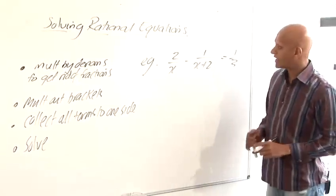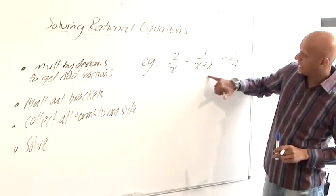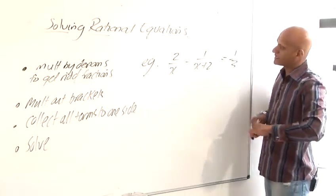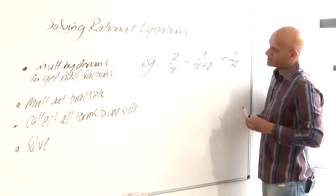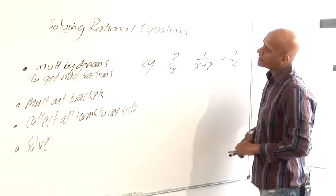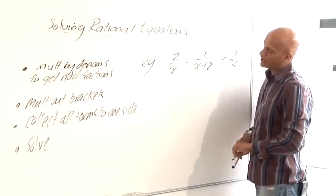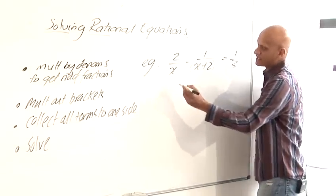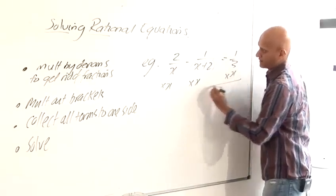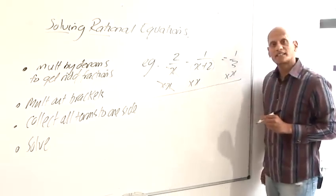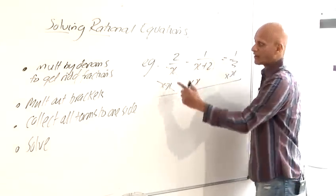Again, we've got a rational equation, we've got fractions, and again, we want to put brackets around any sums, any plus or minus signs inside the fraction. Multiplying by the denominators to get rid of the fraction, so my first denominator is this divided by x, so times x. So the divided by x and the times x cancel each other out. Here, I'm just left with 2.